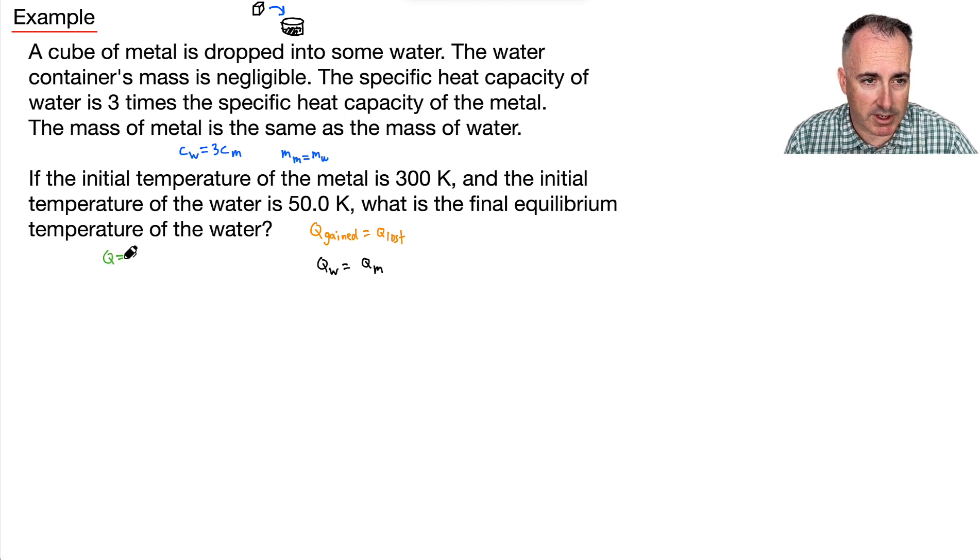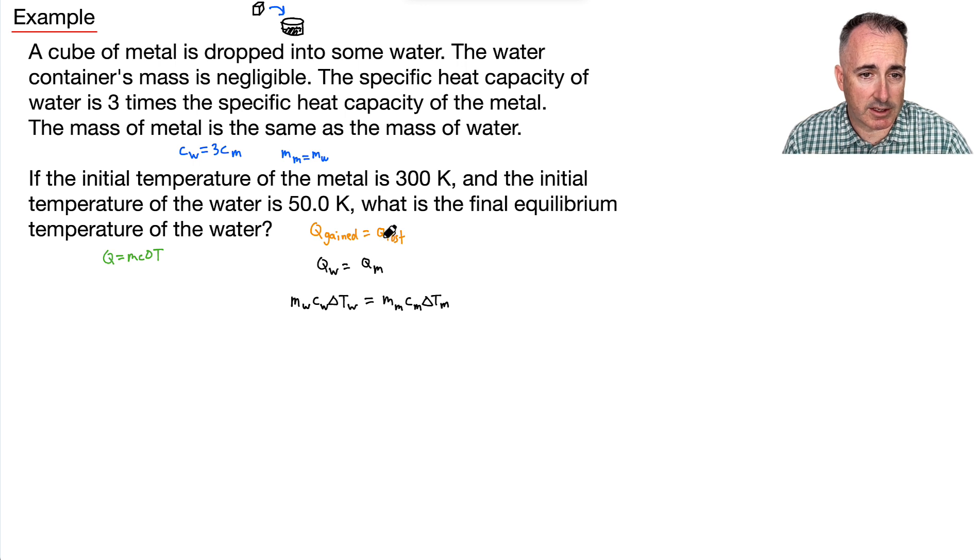So that means I'm just going to set up my equation with some MC delta T's. Remember, I'm going to use that idea, right? The Q equals MC delta T. Except now I'm going to write specific equations now for each of these. So that means now I can say, M water times C water times delta T water. That must equal M metal, C metal, delta T metal. Now do I know anything? Can I replace anything? Yes. I know that because mass of metal equals mass of water, that means I know that these two here will cancel out.